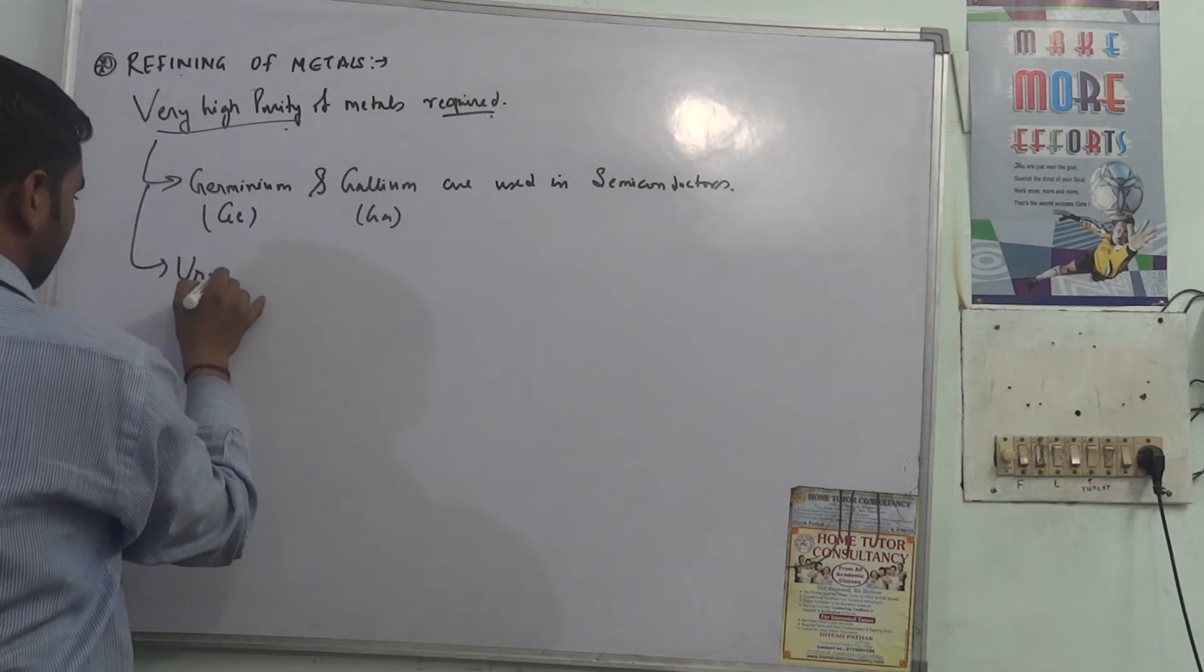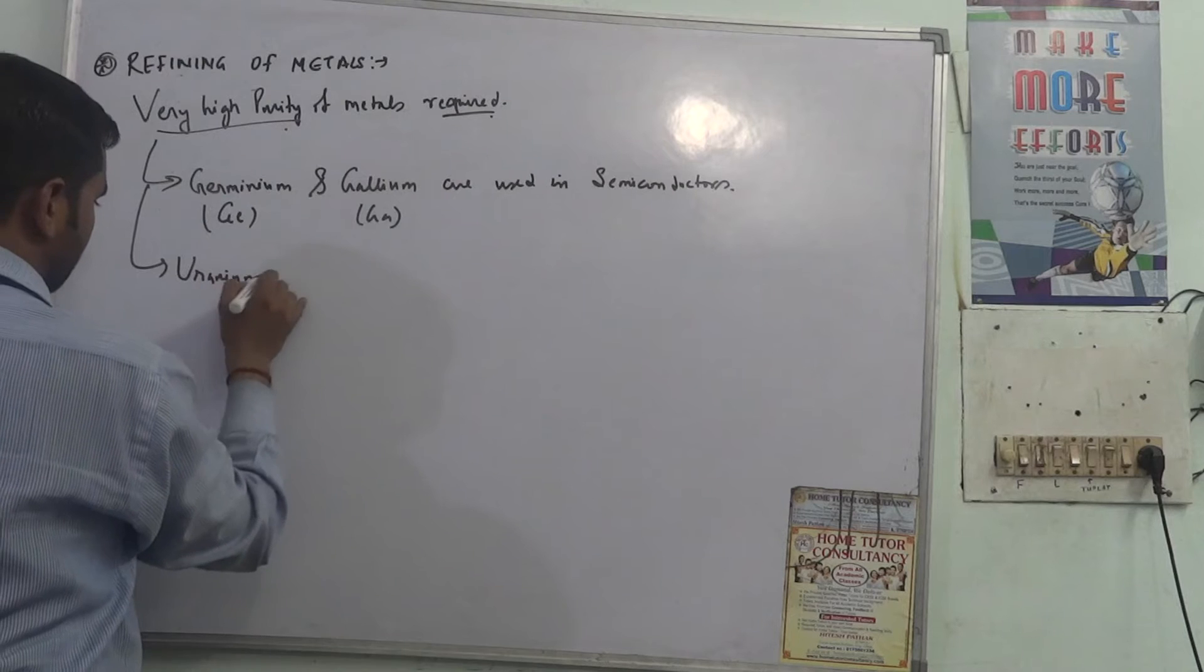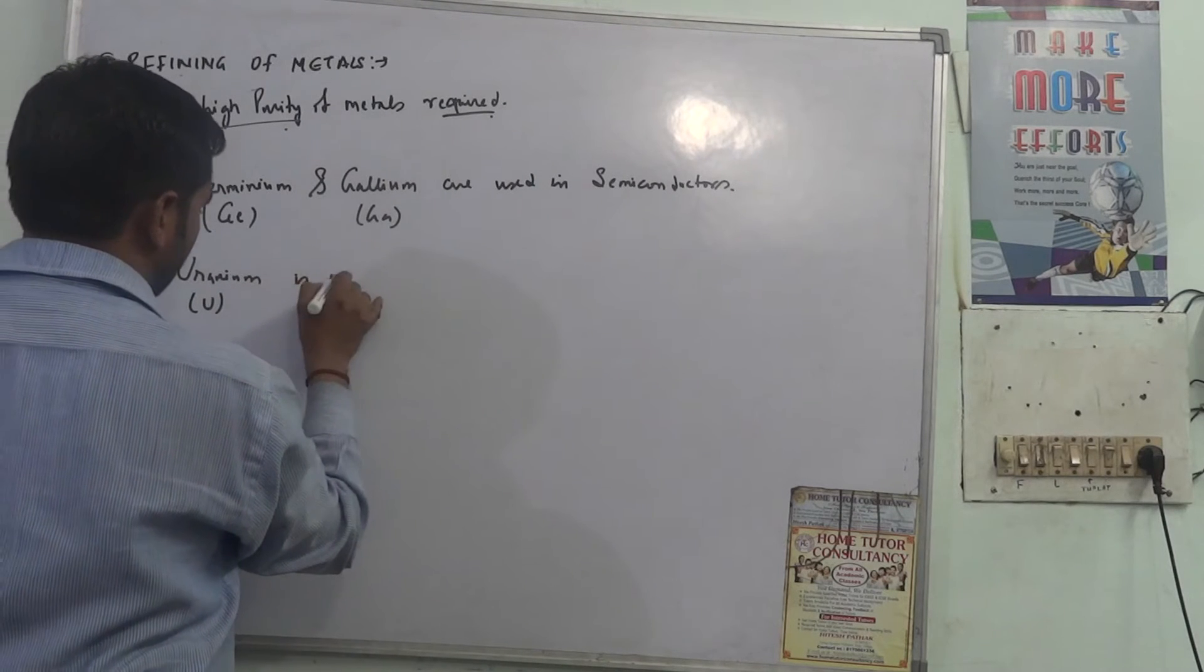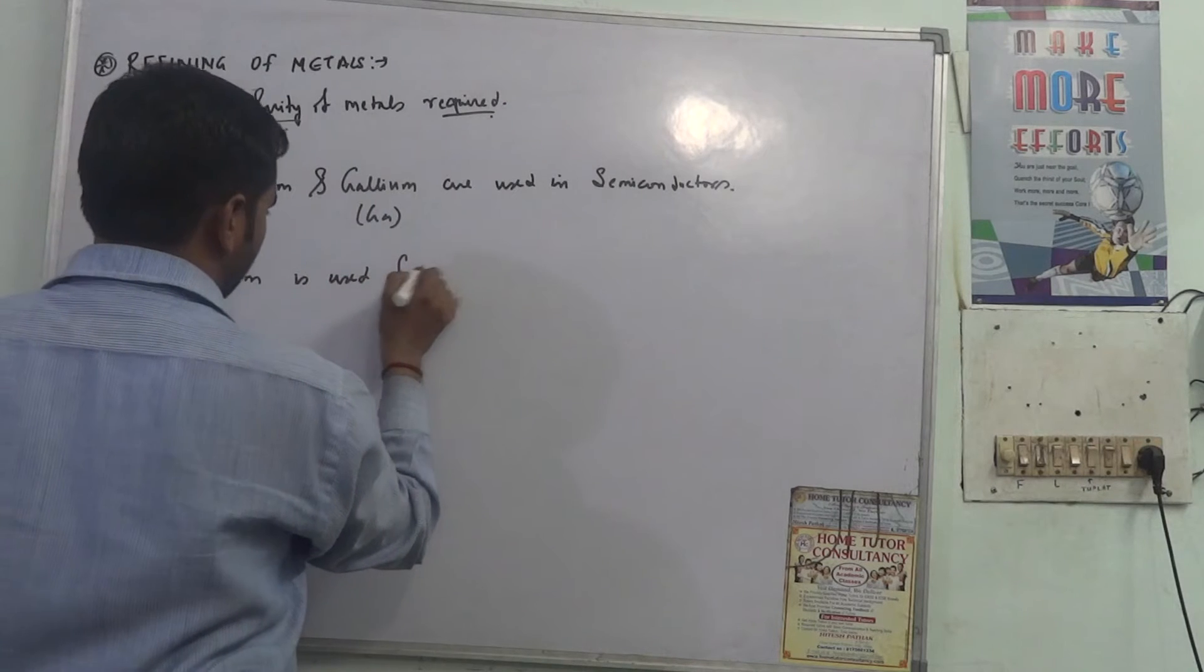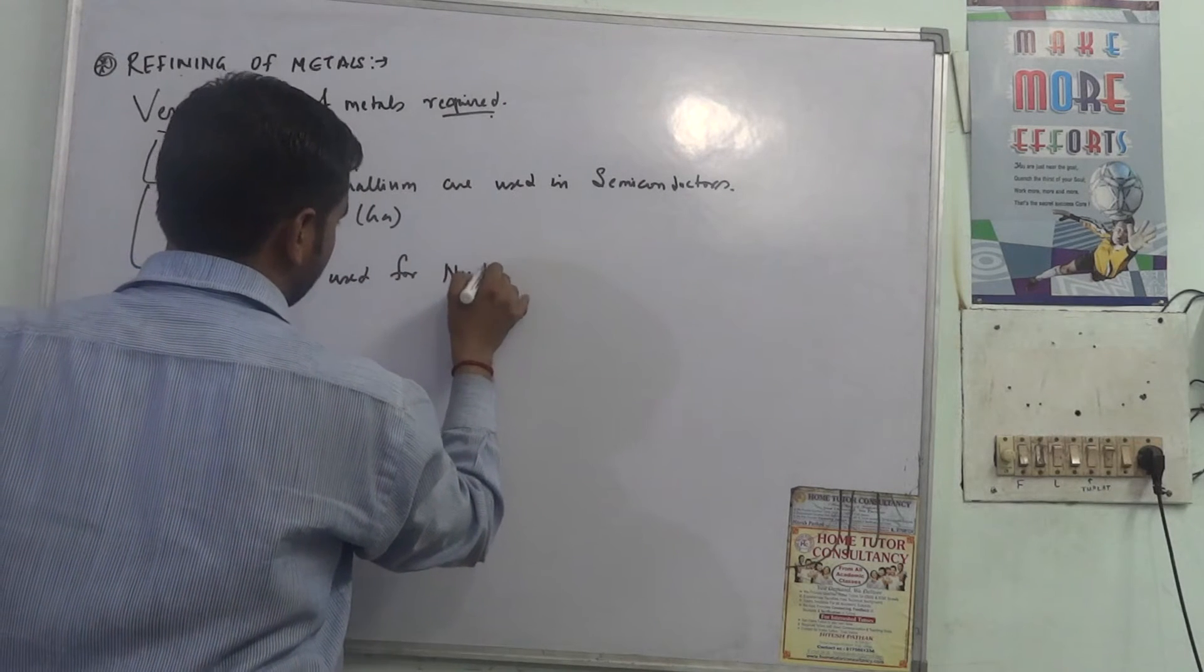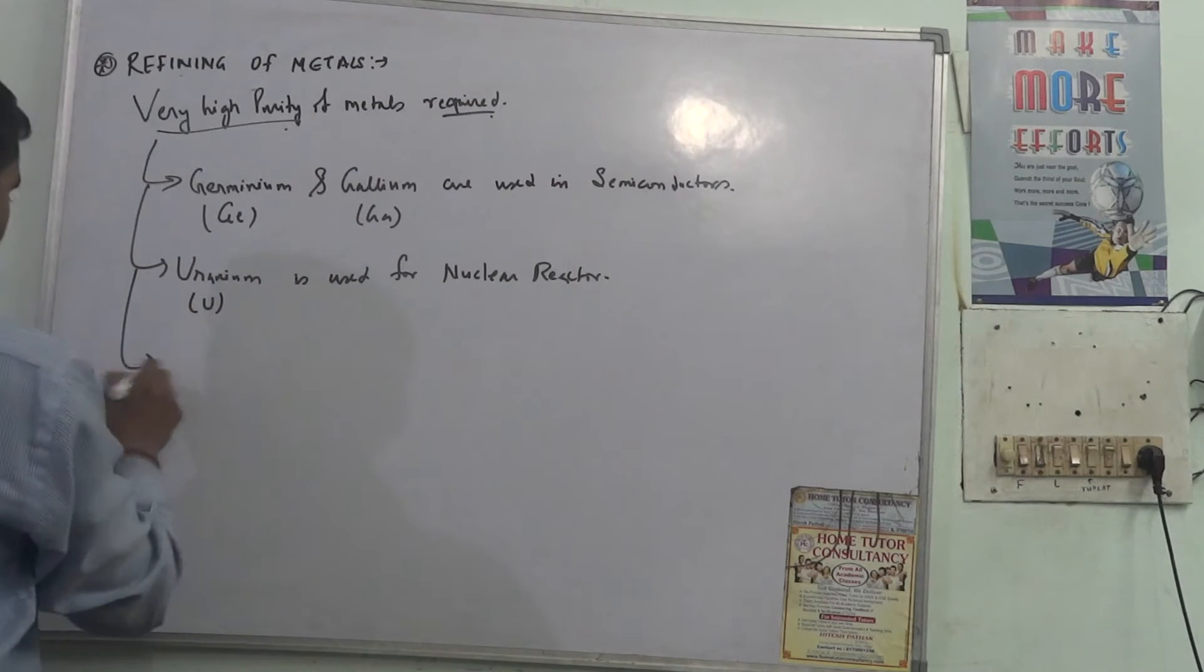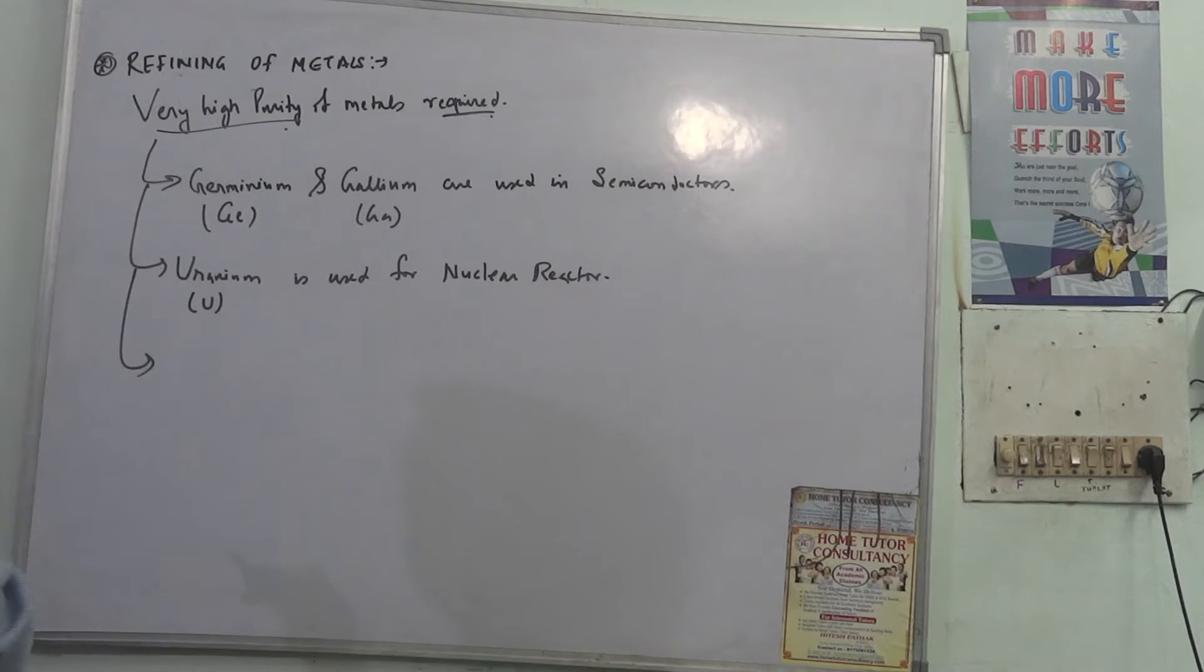Uranium, uranium metal which is used for nuclear reactor. Same, titanium is used for producing different things.